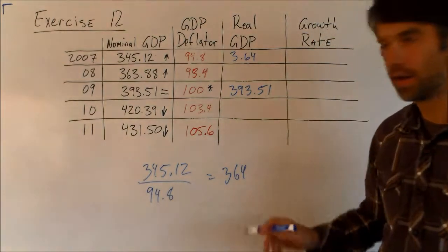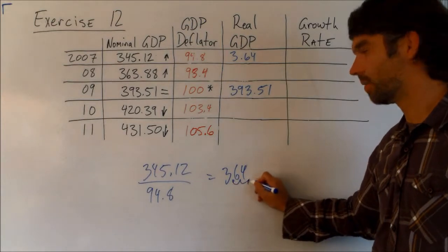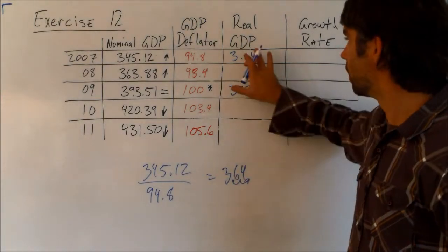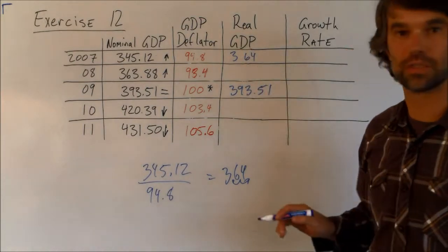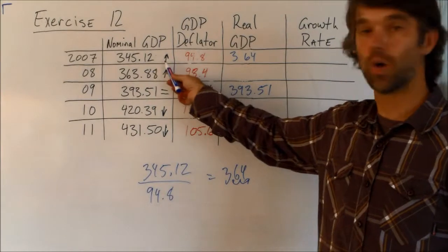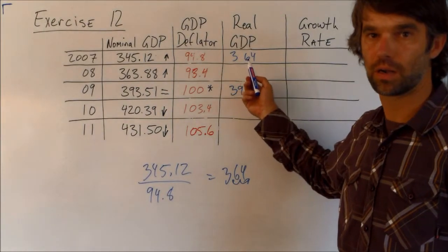Now remember, it's going to be times 100, so I kind of cheated here, and I just did that automatically. We're going to move the decimal two to the right since we're multiplying by 100. So it's going to be 364. And like we predicted, the GDP did go up. The nominal GDP went up when we ran it through the deflator.